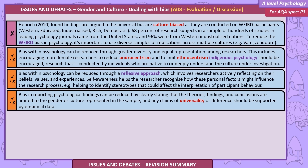Bias within psychology can be reduced through greater diversity and equal representation among researchers. This includes encouraging more female researchers to reduce androcentrism. To limit ethnocentrism, indigenous psychology should be encouraged — research conducted by individuals who are native to, or deeply understand, the culture under investigation.